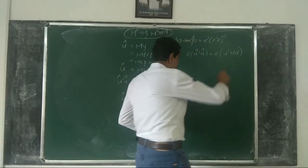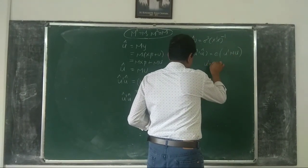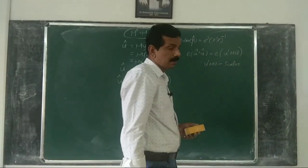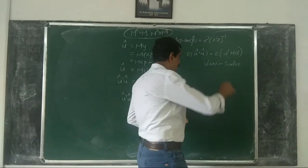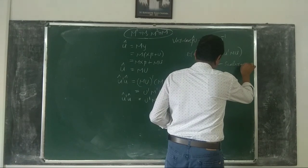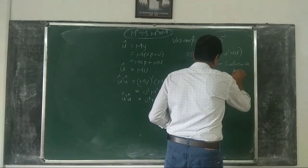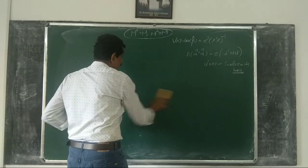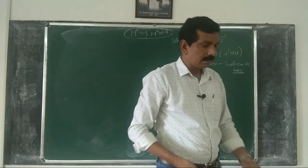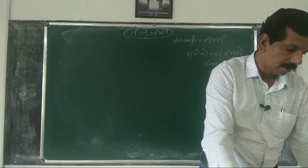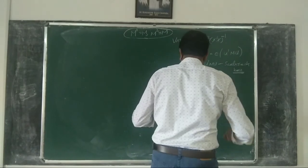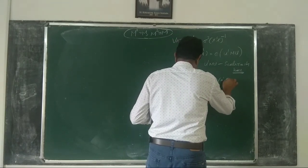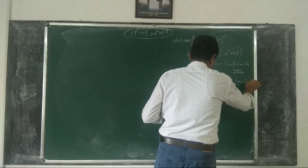U'Mu is a scalar, being a quadratic form, and thus it is equal to its trace. The general result is that a scalar A'A equals trace(A'A) equals trace(AA'). This is an additional property of the trace. For example, if A' = [1, 2, 3], then A'A equals 14, and trace(A'A) equals 14 as well.